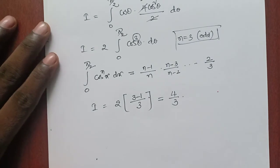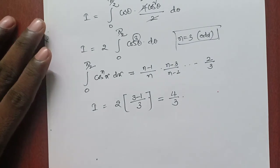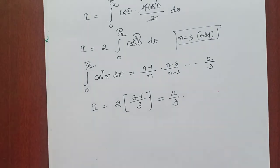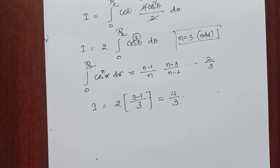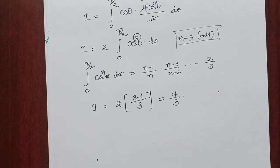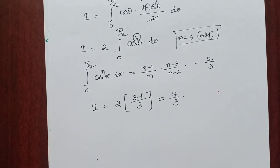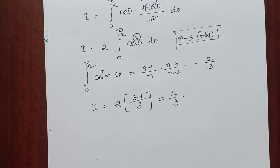So 4 by 3 is the final result. That is the change of order of integration in terms of polar form. Thank you, students. Please do subscribe and share my videos.